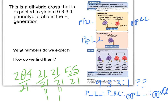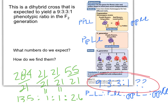So these are 1, yes? What's 284 divided by 21? That equals 13.5. So 13.5 to 1 to 1 to — what's 55 divided by 21? That equals 2.6. So is 13.5 to 1 to 1 to 2.6 anything close to 9 to 3 to 3 to 1? No. Nobody would argue with you that there's anything close to 9 to 3 to 3 to 1 — you'd say these two genes, flower color and pollen shape, are linked.